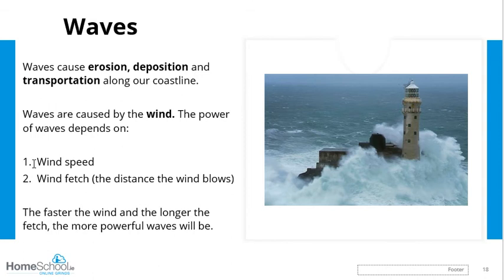The second factor that impacts wave power is the wind fetch — the distance the wind blows. If the wind blows for 500 metres that results in smaller waves, but if it blows for five kilometres that results in bigger waves. Think about an elastic band: if you pull it back three inches and let go it won't go far, but pull it back 30 inches and it results in a powerful release of energy. The faster the wind and the longer the fetch, the more powerful the waves will be.